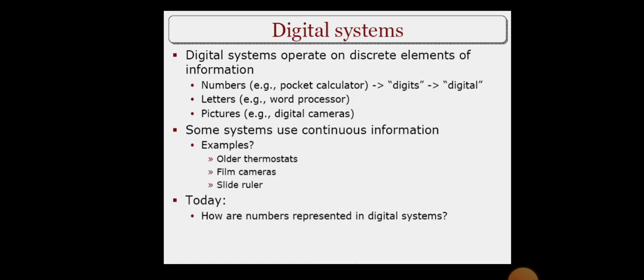Digital systems operate on discrete elements of information. One is numbers, another is letters, another is pictures. Packet calculator uses digits, word processor uses letters, digital cameras use pictures. Some systems use continuous information. Examples: thermostats, video cameras, slide ruler. Today, how are numbers represented in digital systems?